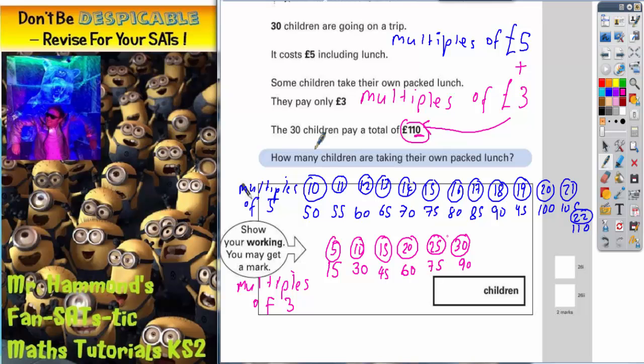So what we're looking for now is one number from the multiples of 5 plus one number from the multiples of 3 that we'll add together to make 110. Now straight away you might notice that 80 plus 30 makes 110. However, if you check the numbers of children, that would be 16 children plus 10 children, and that would only make 26 children, and that can't be right. Because we know we've got 30 children. So this can't be the answer because that would only be 26 children. So now we've got to look for something else.